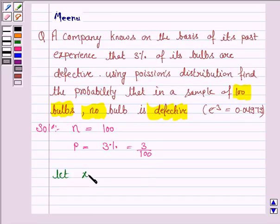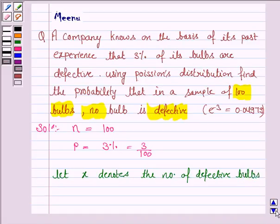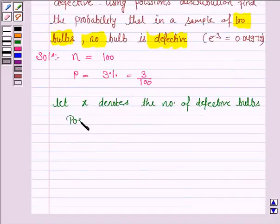Now let X denote the number of defective bulbs. Now the Poisson distribution is given by...